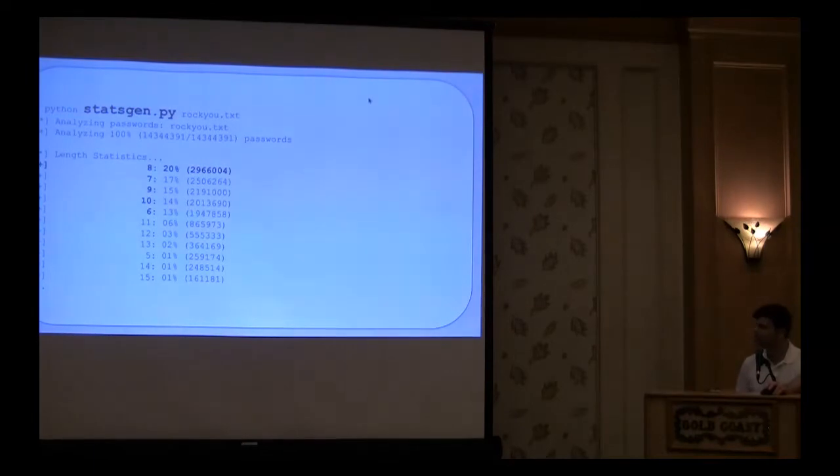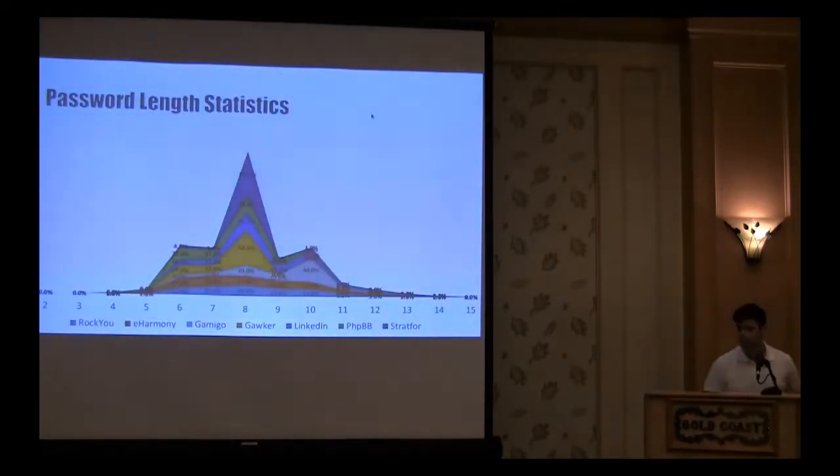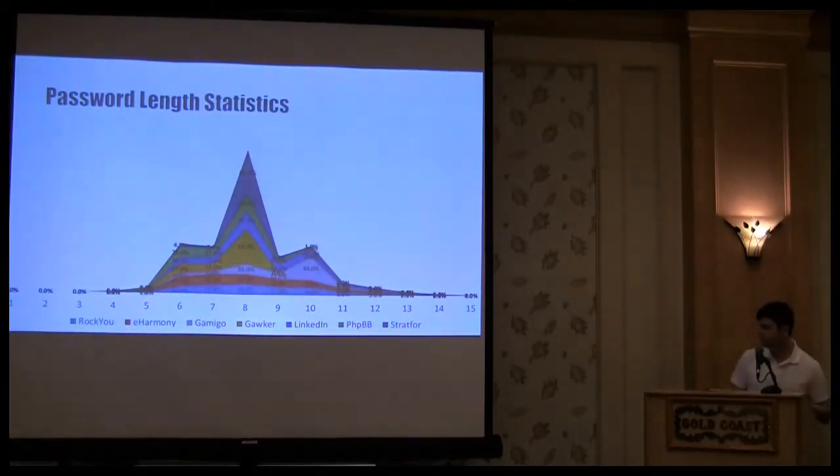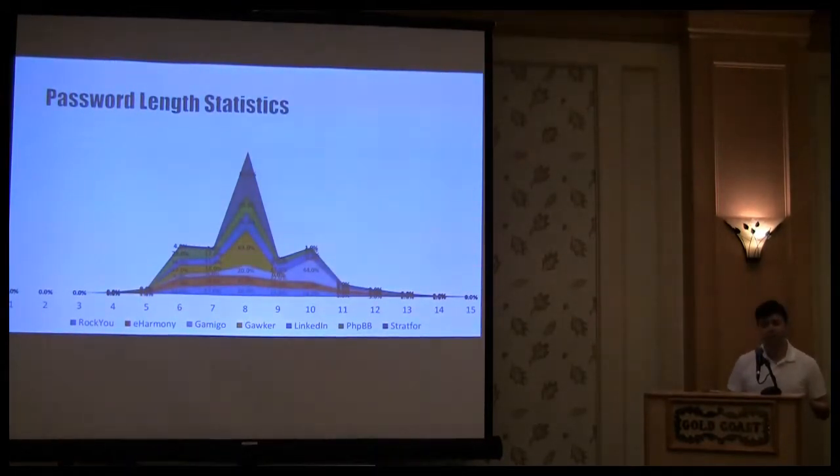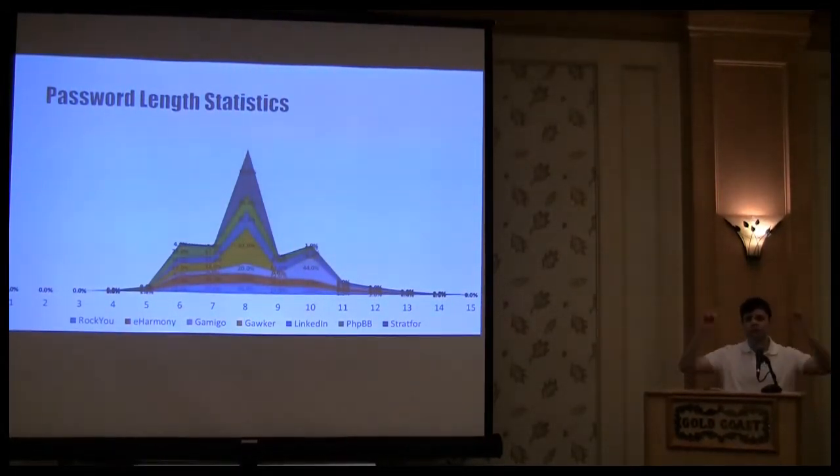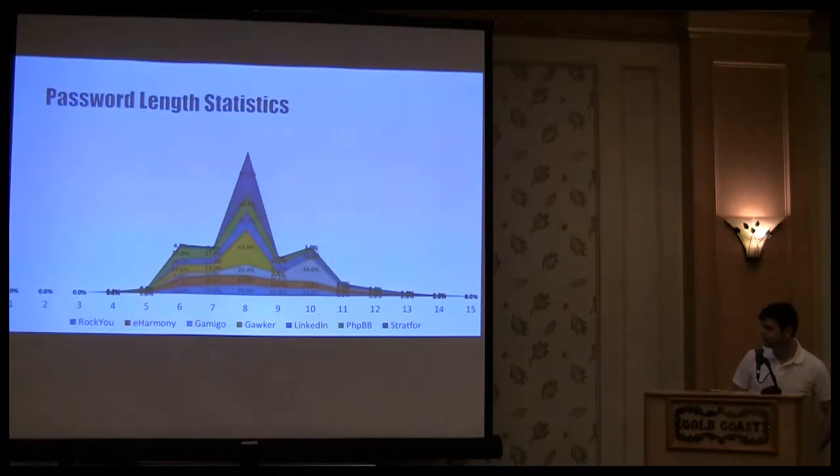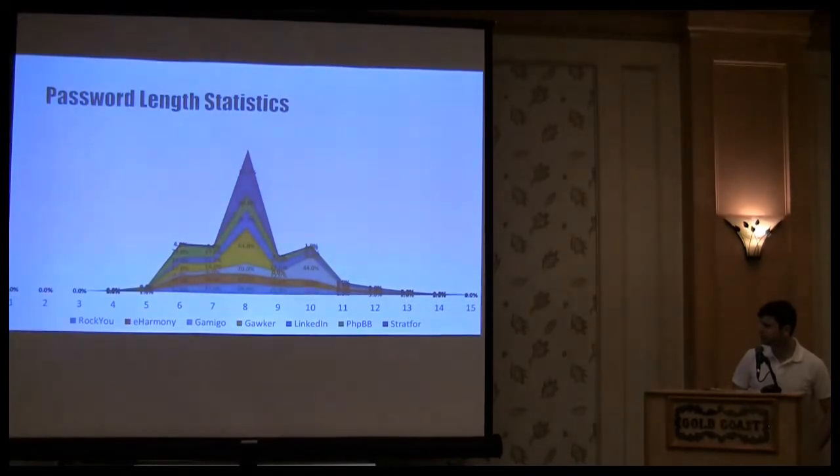After that it's closely followed by 7, 9, and so on. Performing the same analysis on a bunch of other leaked lists, eHarmony, Gawker, and so on, you see clear patterns. The majority, it's almost like a bell curve. There's a majority of passwords being somewhere in the 8 character range. With a few exceptions, like Gawker, 44% are 10 character length.